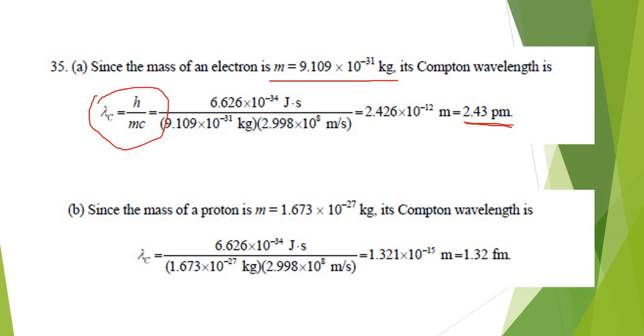Next, we're going to solve for the proton. The photon mass is this value, it's so much heavier than electrons, so you expect very much shorter wavelength. So you just substitute, do the same thing as you did before, and then you're going to have 1.32 femtometer.